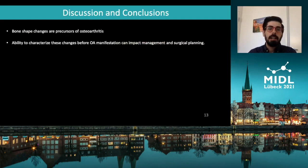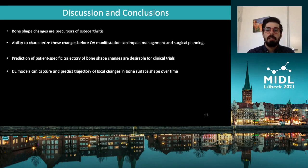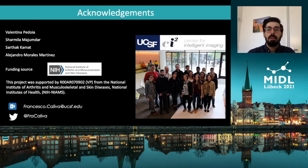Changes in bone shape are precursors of osteoarthritis, and being able to characterize these changes before the manifestation of the disease can greatly impact patient management. Our work is oriented towards clinical trials, but it is preferable to predict precise patient-specific trajectories of changes. We observed that deep learning models can capture and predict the trajectory of local changes in bone surface shape over time. To conclude, in this study we predicted femoral and tibial bone shape changes in a cohort of patients with osteoarthritis and control groups 48 months ahead of time. I would like to thank my team of co-workers at UCSF, the funding sources, and of course you for your kind attention. Thank you.